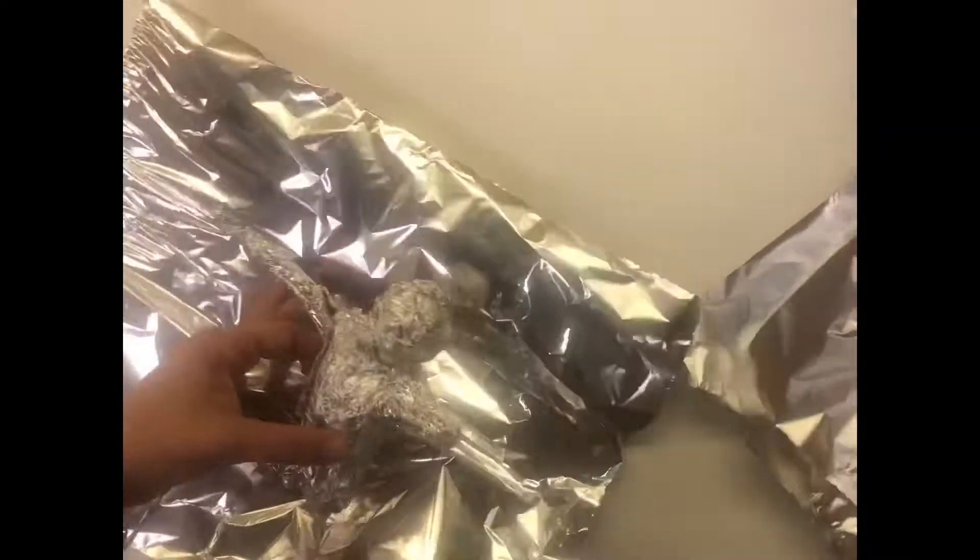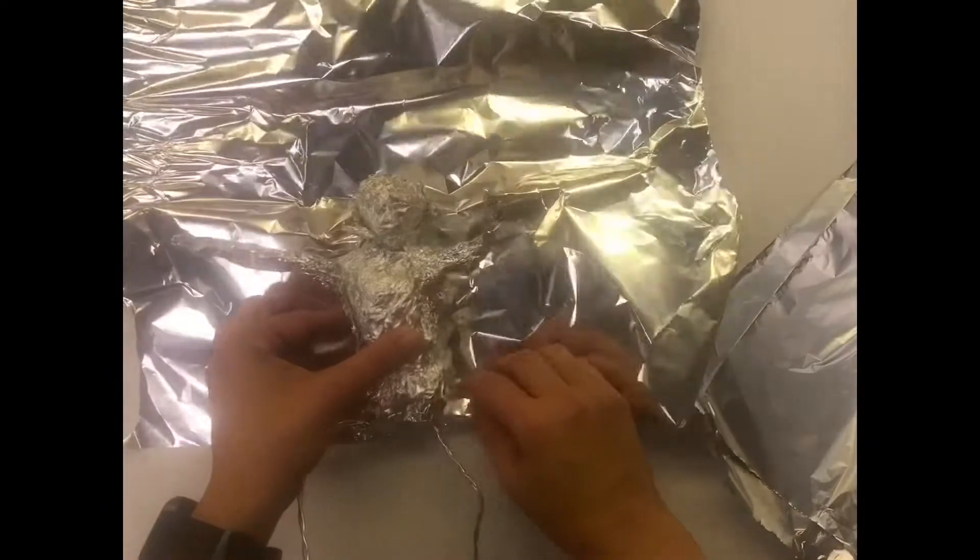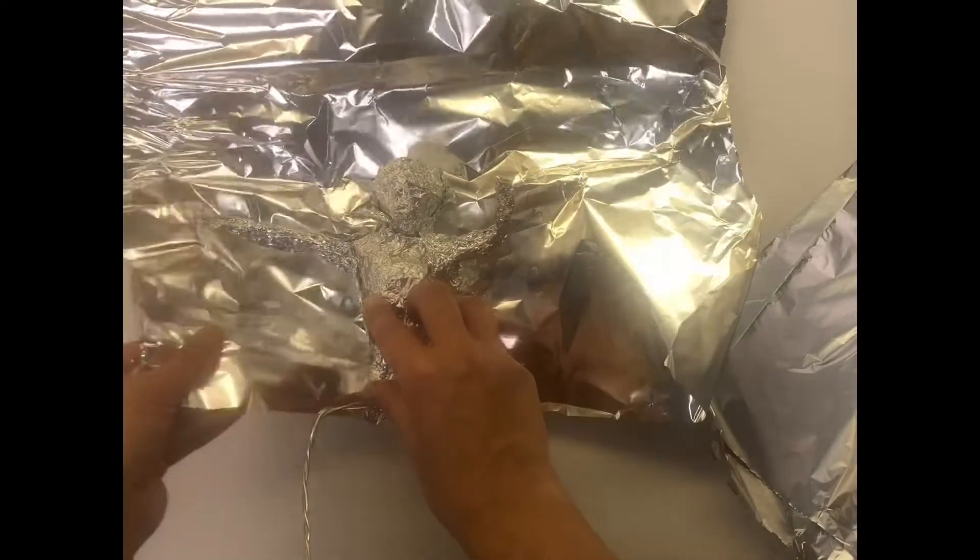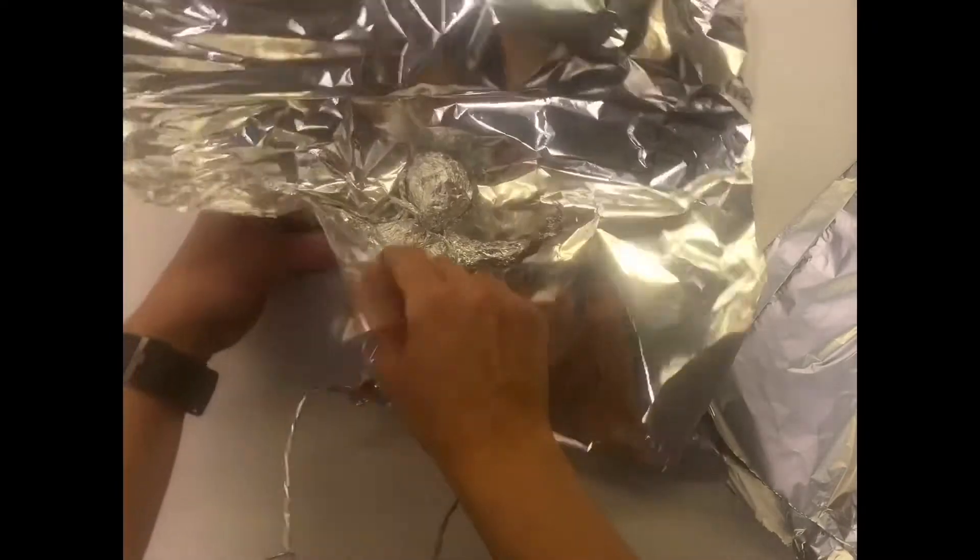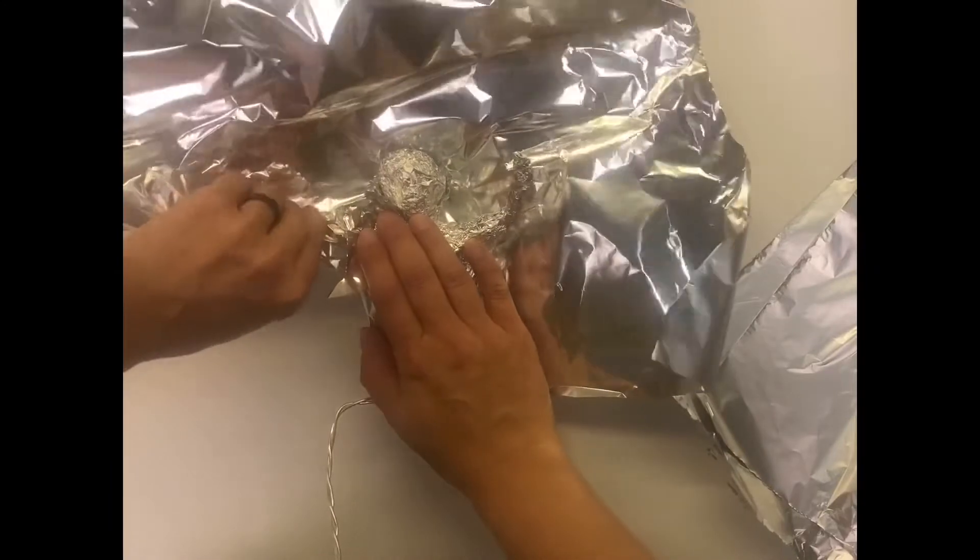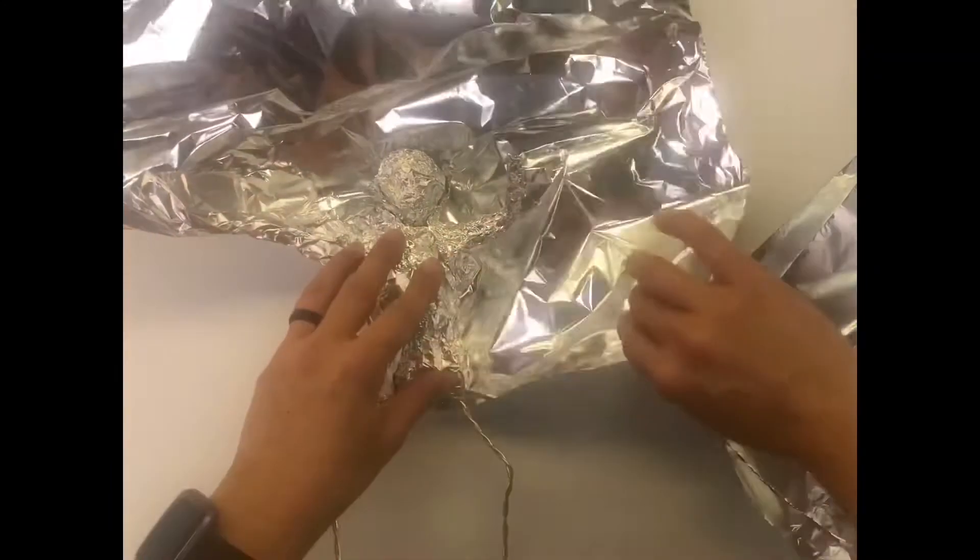So I'm just going to take a blanket and I'm going to wrap it up and around. If the foil rips that's okay. I just want to secure and lock some of these things in place.